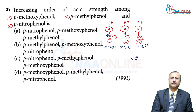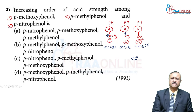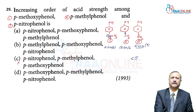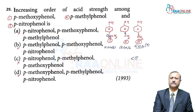Para-nitrophenol is more acidic than the other two, so it has the highest acid strength. Para-nitrophenol is present in option D (not in option C), so option C is the wrong answer. We can remove options C and A, leaving options B and D — both contain para-nitrophenol.